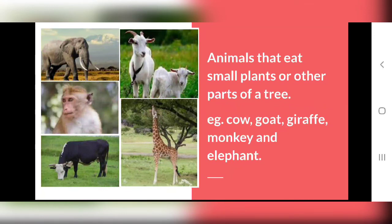Now, you can see over here: cow, goat, giraffe, monkey and elephant. These animals eat plants or parts of a tree — soft stems, branches and leaves. So these animals eat those things.